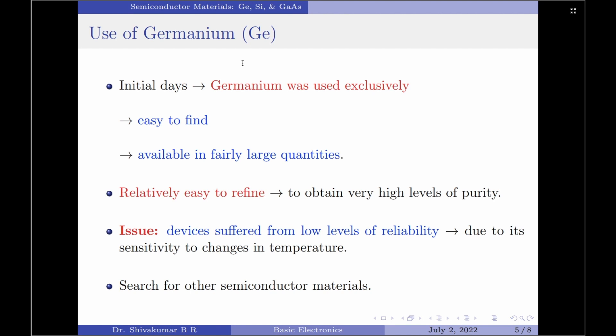It was available in quite large quantities. Germanium was also relatively easy to refine to obtain very high levels of purity. Please note, high levels of purity is one of the most important aspects in the fabrication process.